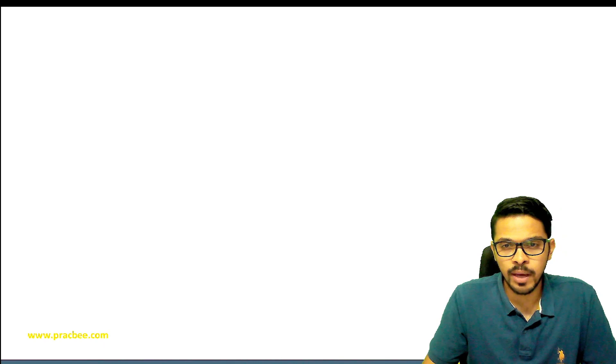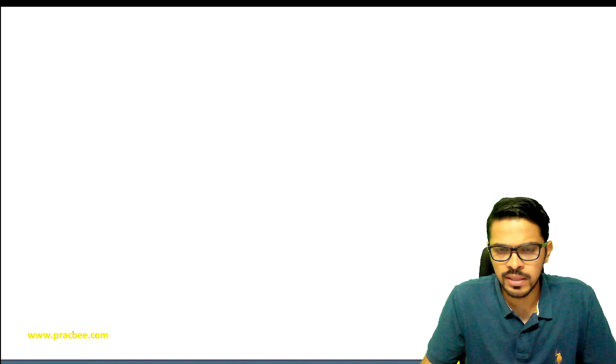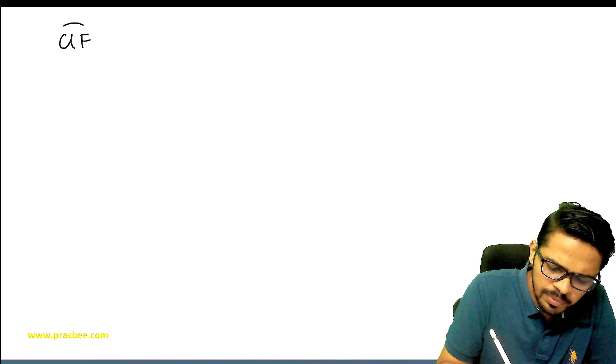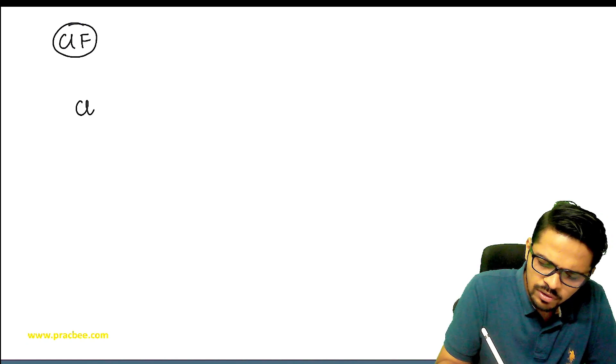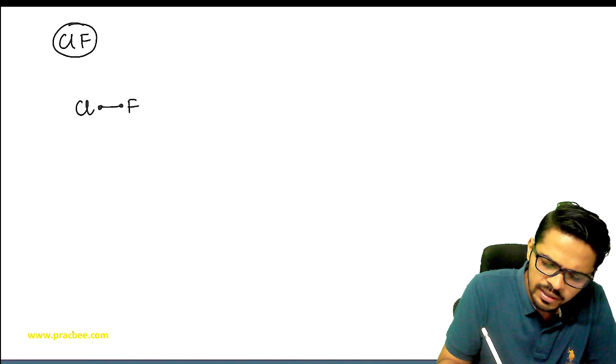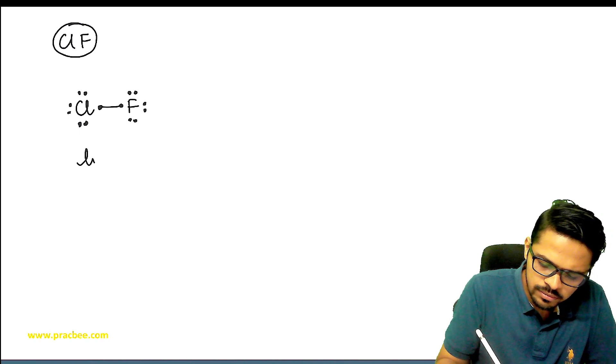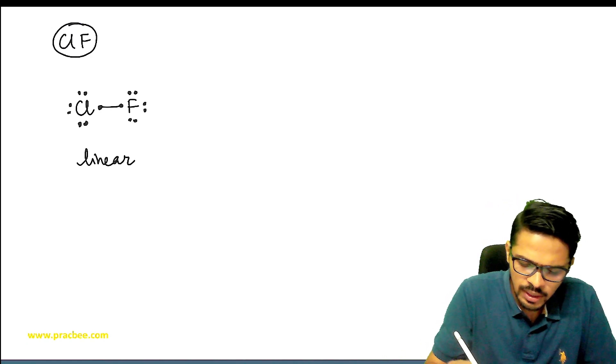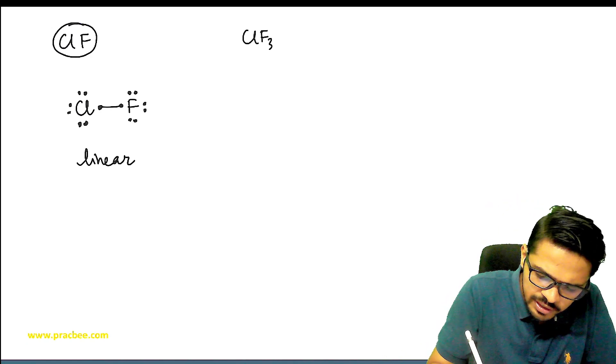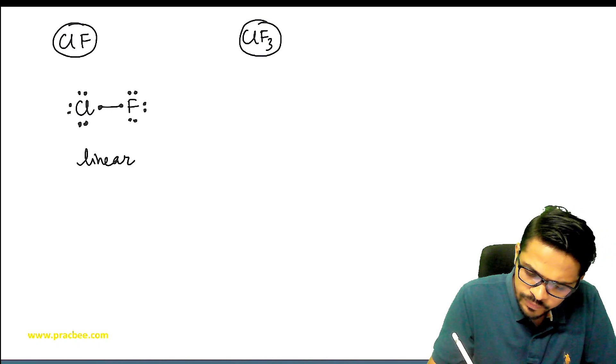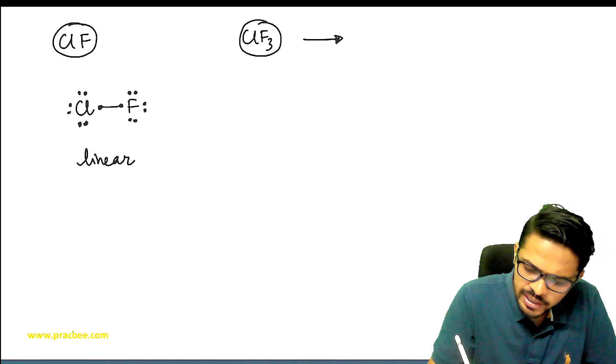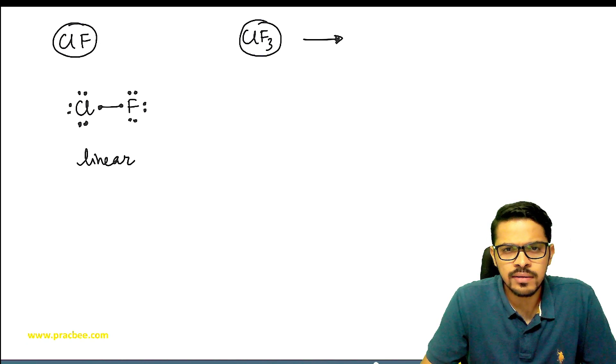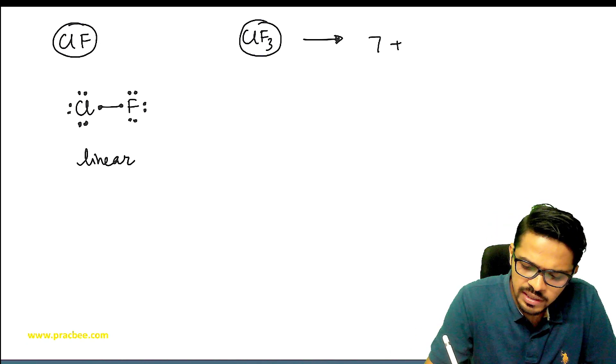So in general, interhalogen compounds we get are in these 4 different types. Now first, let's talk about their shape and hybridization. Let me take a very basic example. If we take ClF, then you know there is one bond between them and three lone pairs on each.